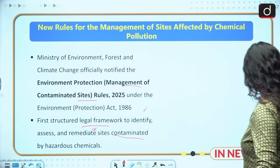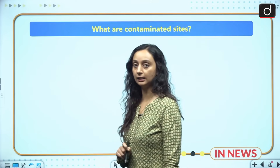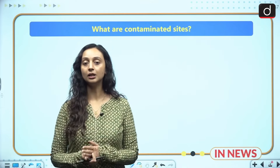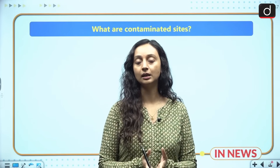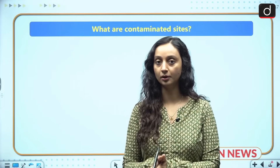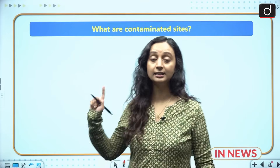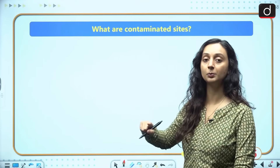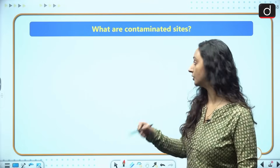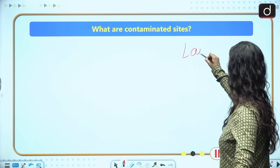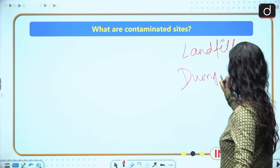Starting with the basics: chemical pollution is the pollution caused by the release of hazardous chemicals. These chemicals could either be naturally occurring or manmade, but when they exceed a certain threshold, they cause chemical pollution. These contaminated sites have been historically exposed to such contaminants — for example, landfills or dumping grounds.